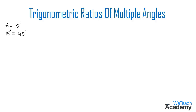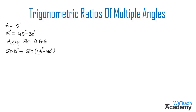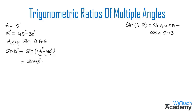We can write 15 degrees as 45 degrees minus 30 degrees. Applying sine on both sides, we get sine 15 equal to sine(45° - 30°). This is in the form of sine(a - b), so using the compound angle formula: sine(a - b) = sine a cos b minus cos a sine b. Replacing a with 45° and b with 30°, we get sine 45° cos 30° minus cos 45° sine 30°.